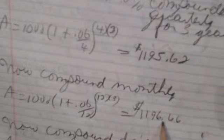Now let's take that same $1,000 and let's invest it at 6%, but let's do it monthly, 12 times a year. And when you do that, you get $1,196.66. So we made maybe a dollar more by compounding it monthly.